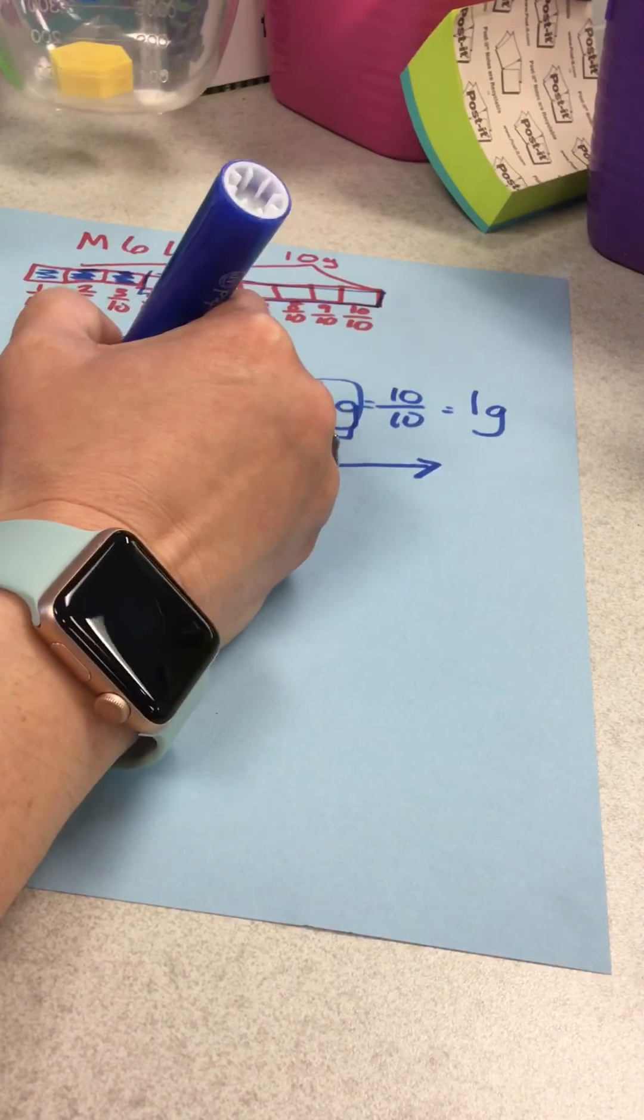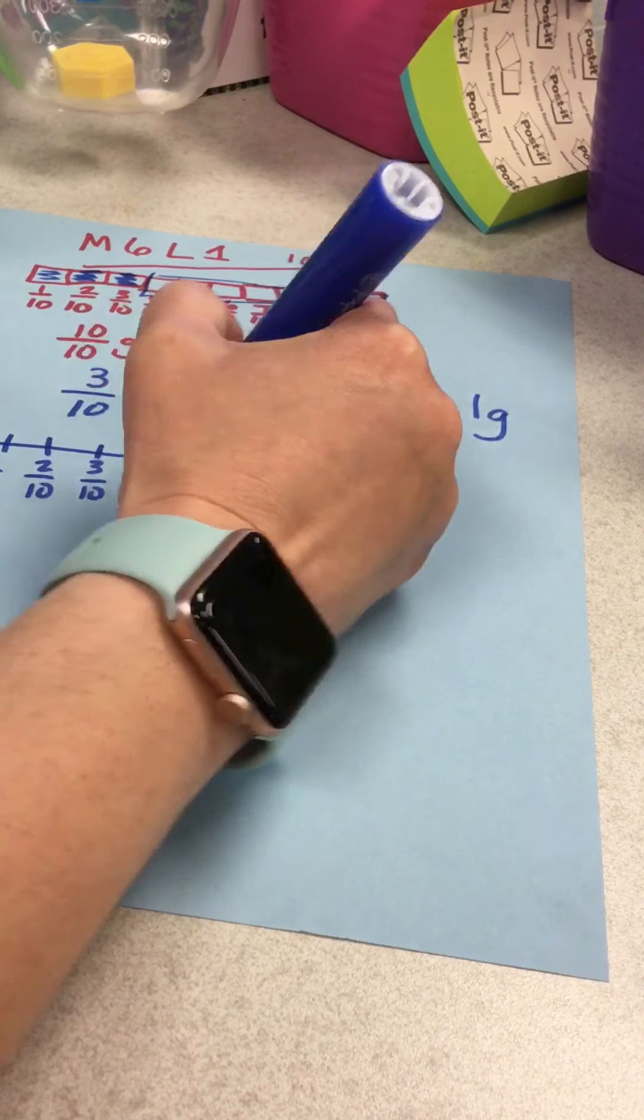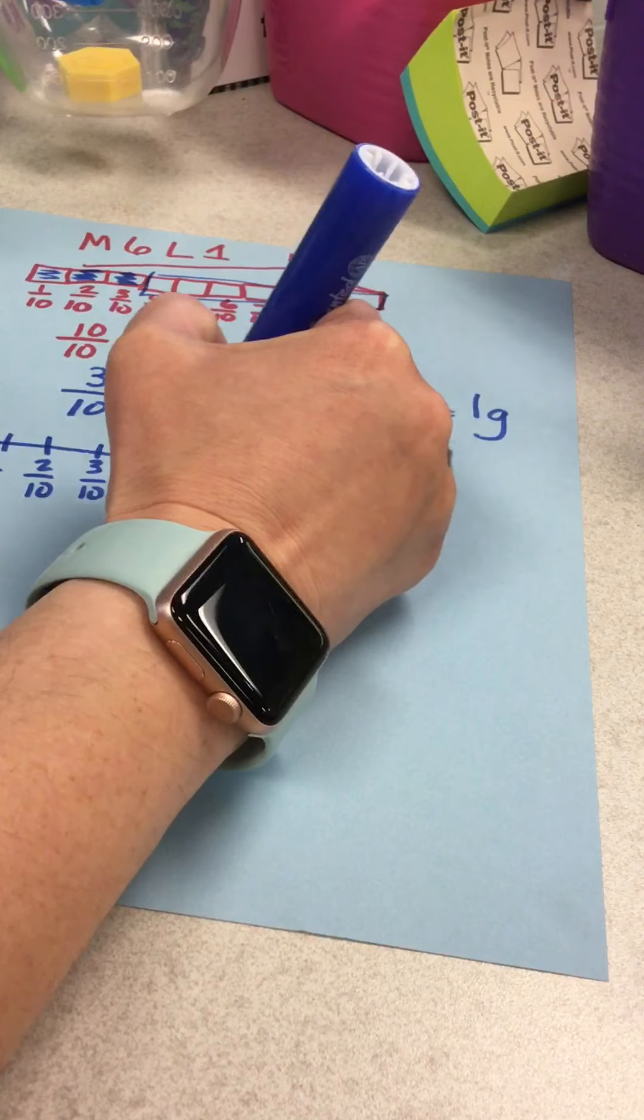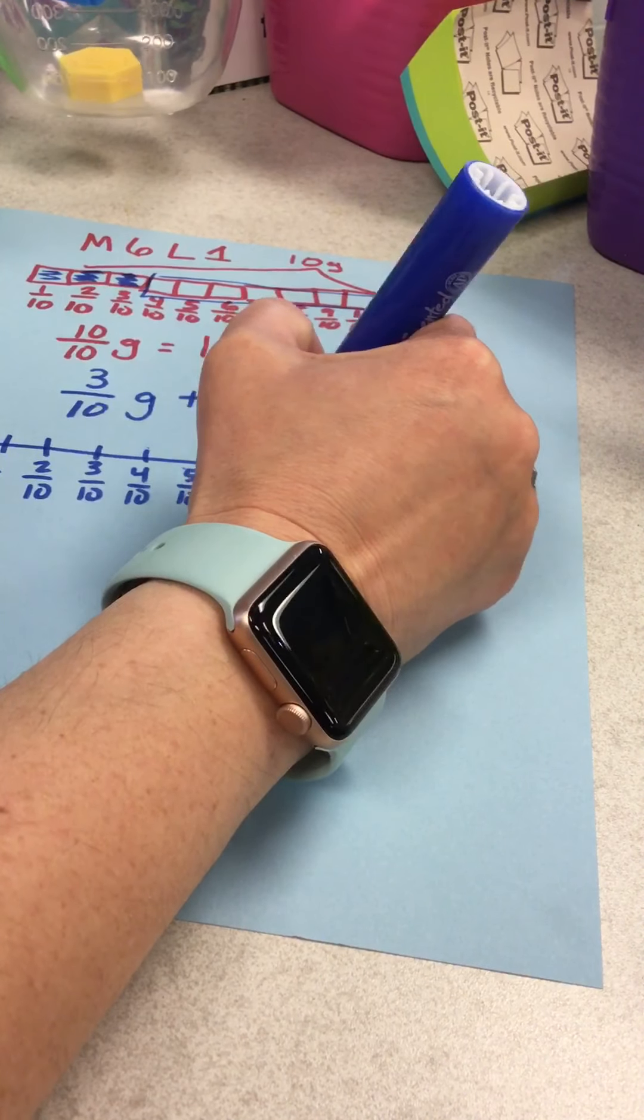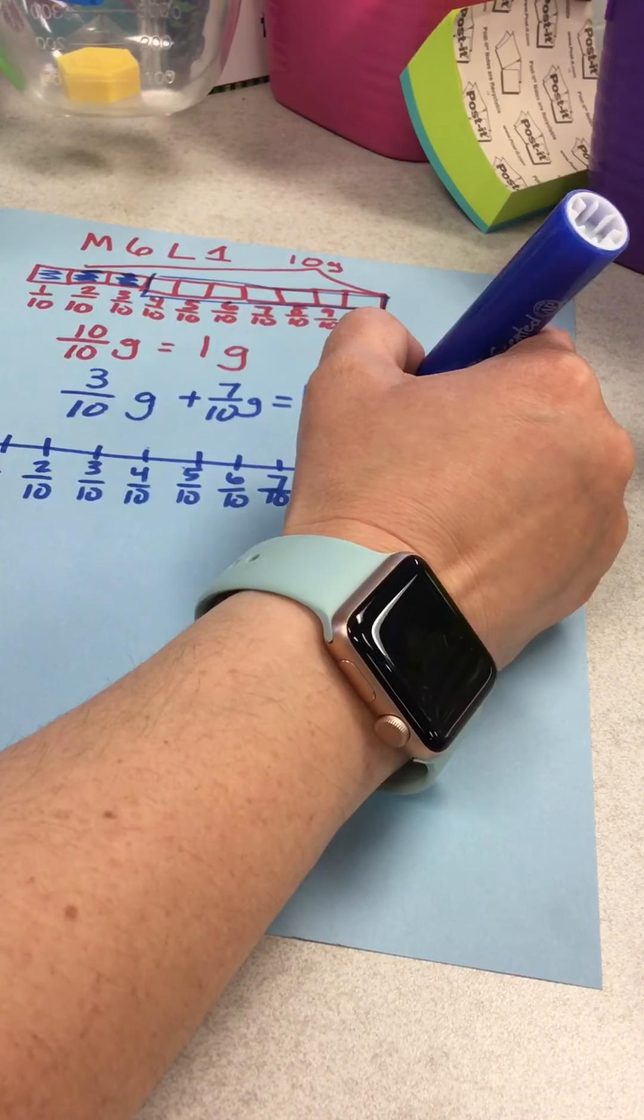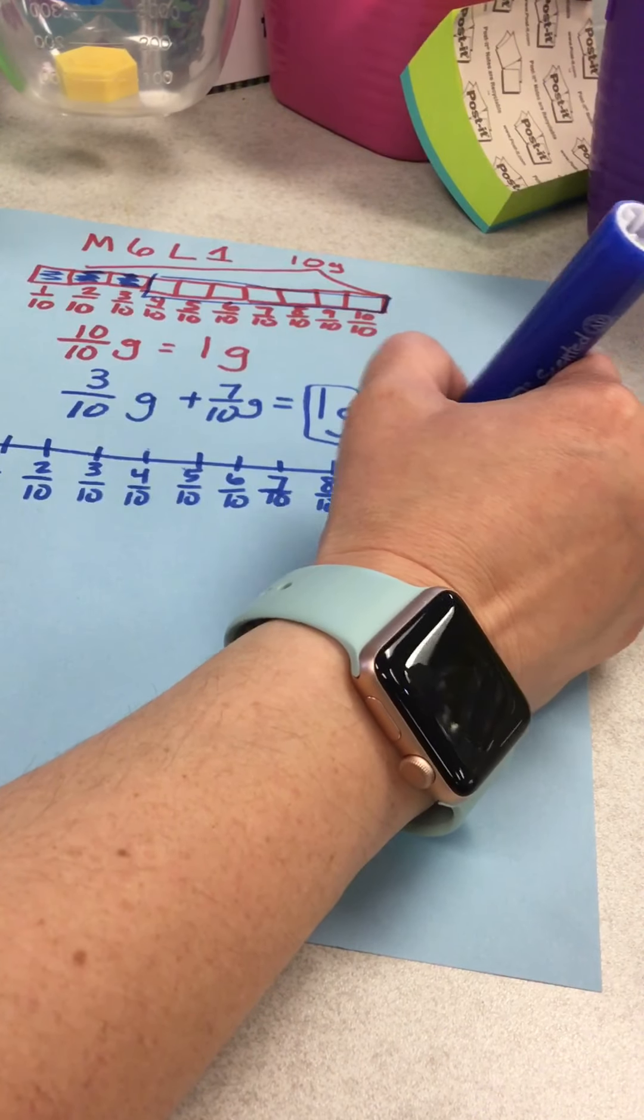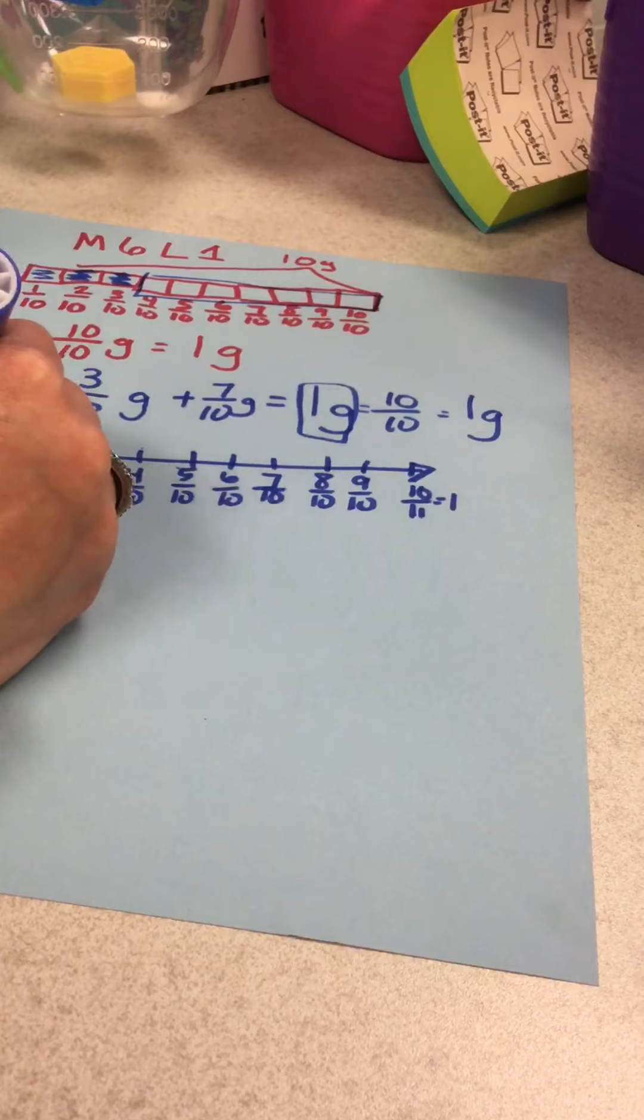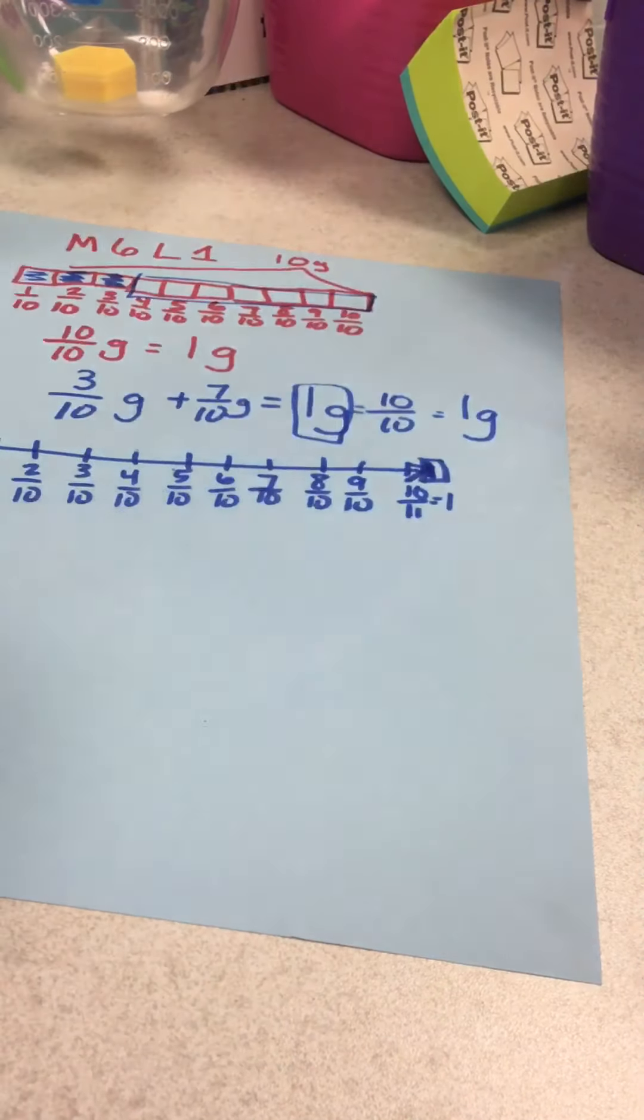So I got two tenths, three tenths, four tenths, five tenths, six tenths, seven tenths, eight tenths, nine tenths, and then ten tenths, or that also equals one. And down here you got zero, so zero to one.